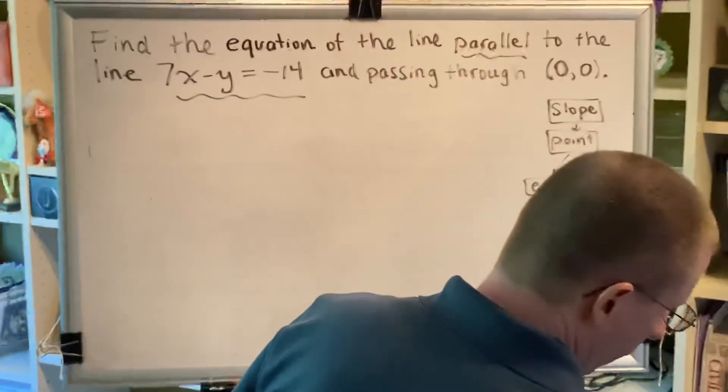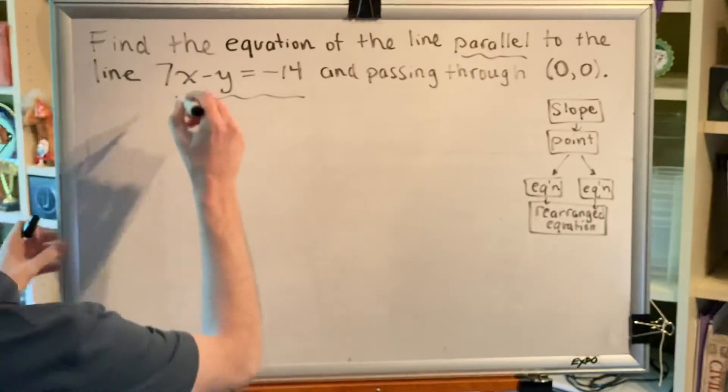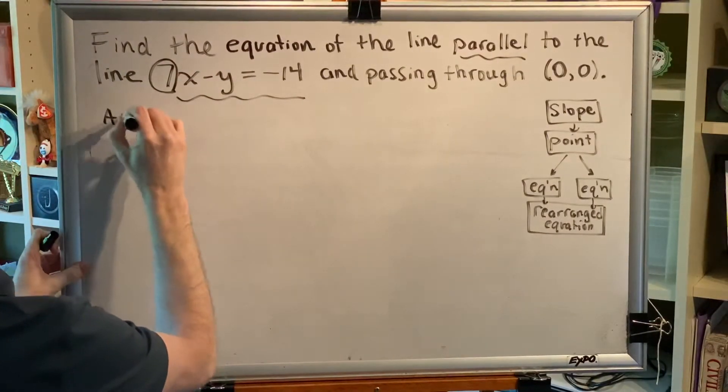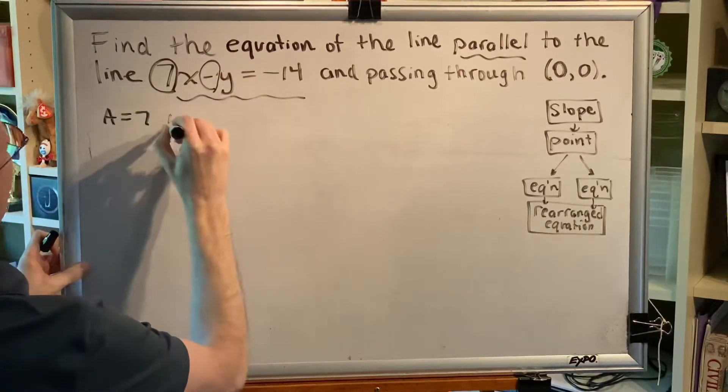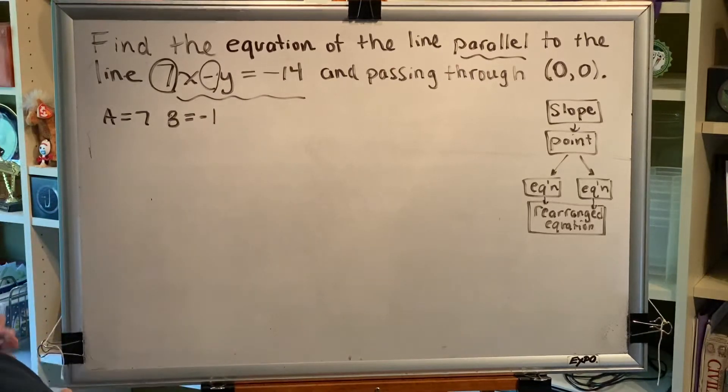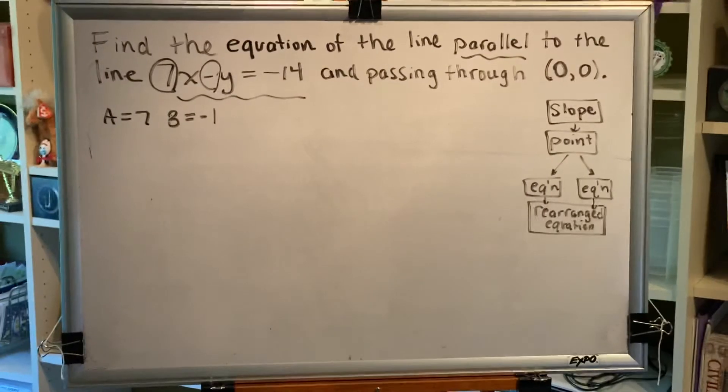Let's identify our coefficients a, b, and c. So seven, that's the a. This negative represents the number negative one, that's the b, and the formula for slope is negative a over b.